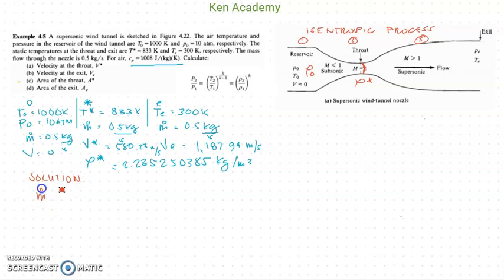The mass flow rate equation is given by density times area times velocity. We are looking for the area of the throat. Therefore, we need to get the density at the throat and the velocity of the throat. We also need to know the mass flow rate at the throat.